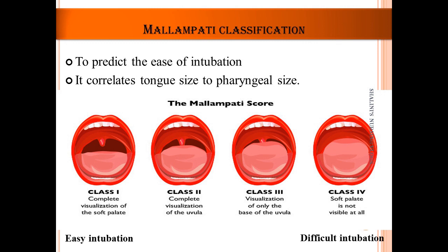The Mallampati classification predicts the ease of intubation by correlating tongue size to pharyngeal size. Class 1: you can completely see the soft palate — easy intubation. Class 2: you can visualize the uvula. Class 3: you can only see the base of the uvula, the soft palate is not very visible. Class 4: the soft palate is not visible at all — very difficult intubation.